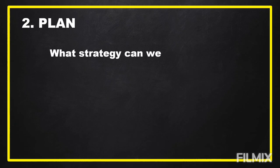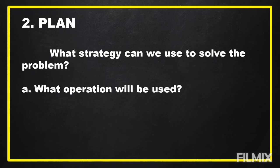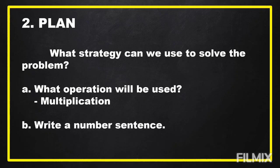After we understand the problem and know what is asked and what are the given facts, we are going to plan. What strategy can we use to solve the problem? We are going to think what operation will be used. In our problem, we are going to use multiplication. Then we are going to write a number sentence: 7/8 times 160 is equal to N.